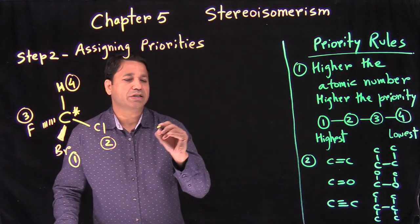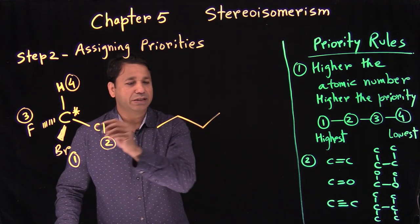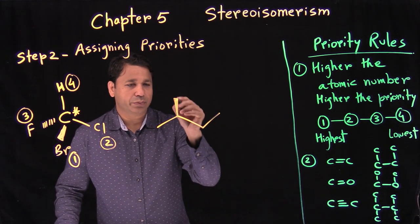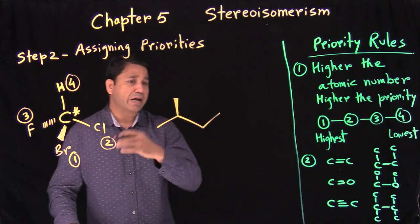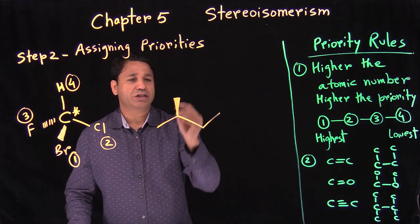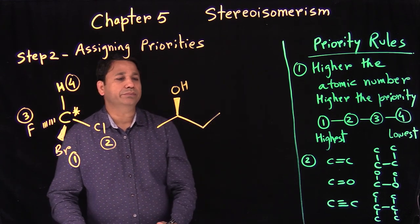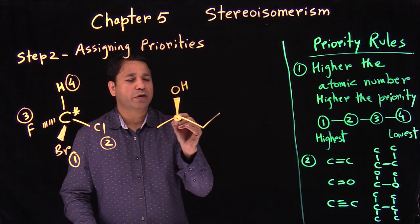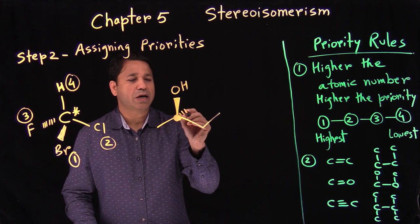Let's try some more complex examples, a little bit more complex than just having four simple groups. We'll bring back all the examples we did before. We already know where the stereogenic carbons are.